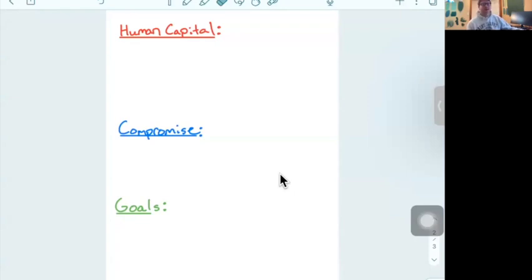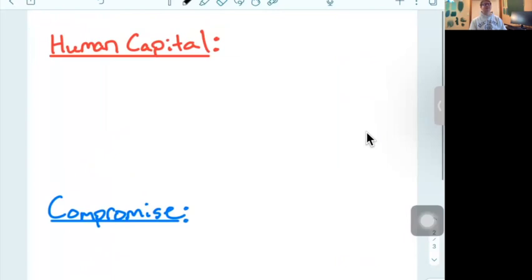All right. Well, I took that little time to explain meta concepts and themes because today I want to talk about three of those themes, okay? Three of those meta topics. The first is human capital. The second is compromise. And the third is goals.